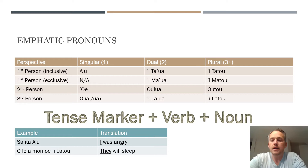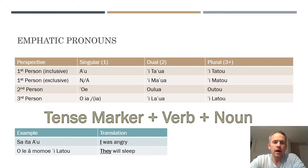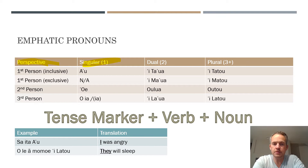As you can see in the slide — and I really encourage you, if you're serious about this, go to the link below and download the slides so you can follow along and make notes. Basically, what I've got in this table are the different perspectives of pronouns: whether it's first person, second person, or third person, and then whether we're talking about one person, two people, or three or more people.